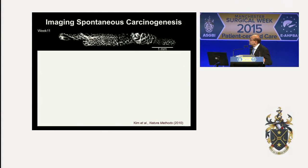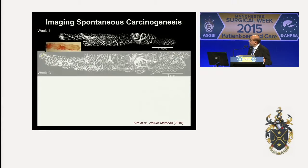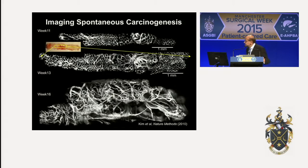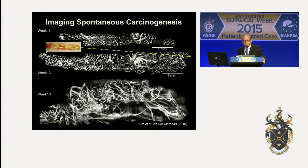In an 11-week-old APC min mouse you can see the blood vessels are already beginning to look abnormal. By week 13 they are even more abnormal, and in a 16-week-old mouse there are regions in the tumor that are avascular — you cannot see any blood vessels there. You can imagine that if you're injecting any chemotherapeutic agent, these avascular regions will have difficulty in drug accessibility because of lack of blood vessels.